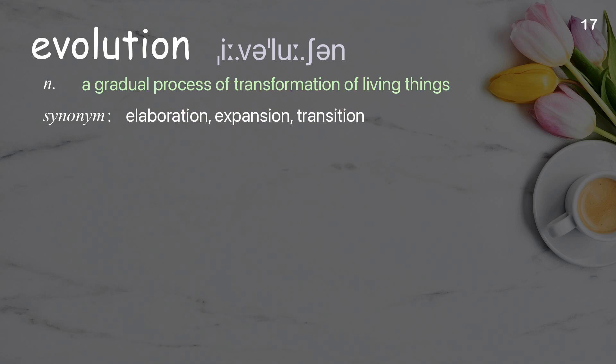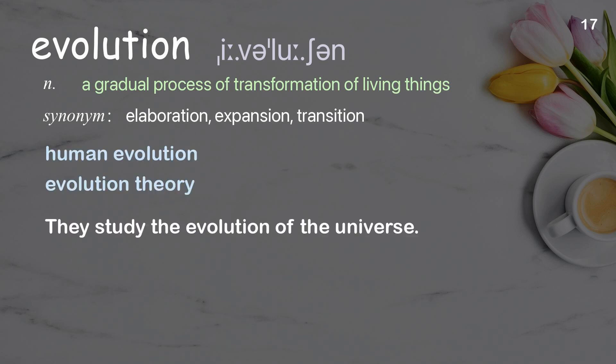Evolution: A gradual process of transformation of living things. Examples: human evolution, evolution theory. They study the evolution of the universe.